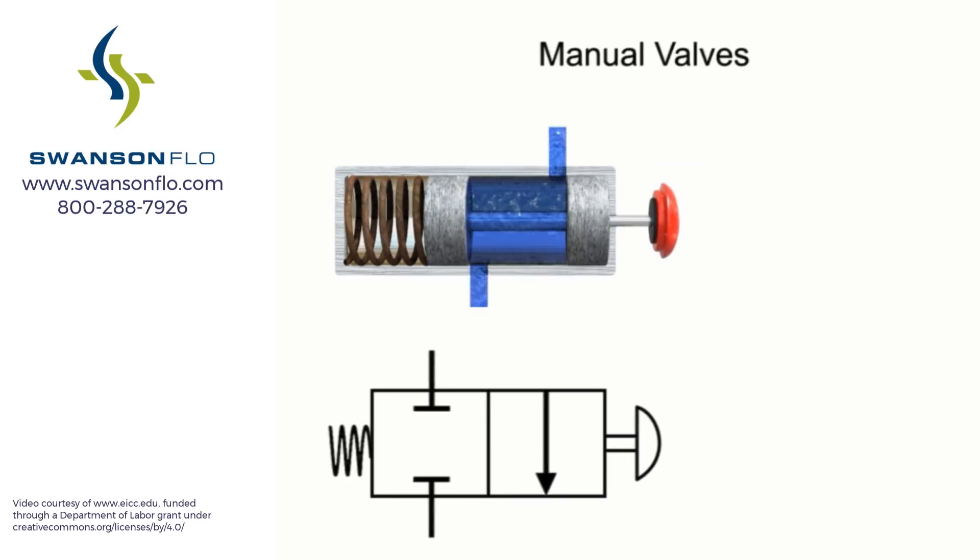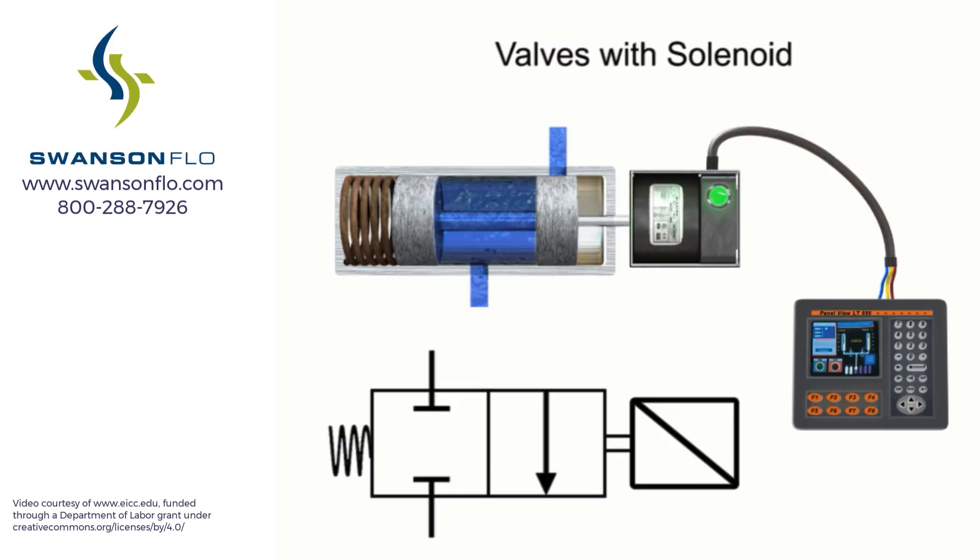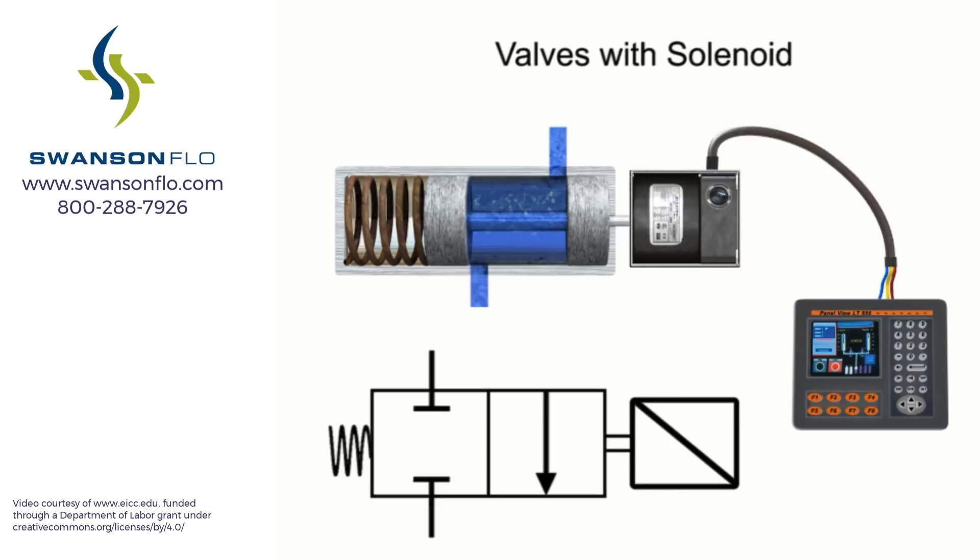By contrast, valves with a solenoid actuator respond to an electrical signal for shifting. With electrical control, machine cycles can be set up for automatic sequencing, and operator control can be exercised from a remote location.